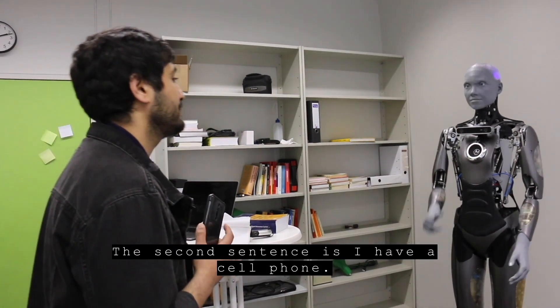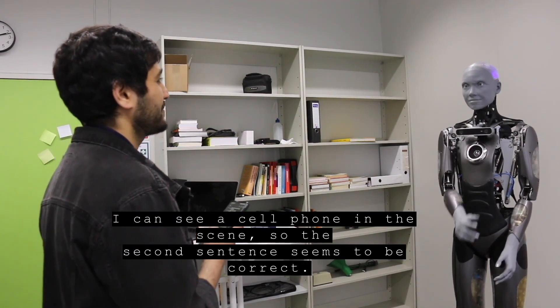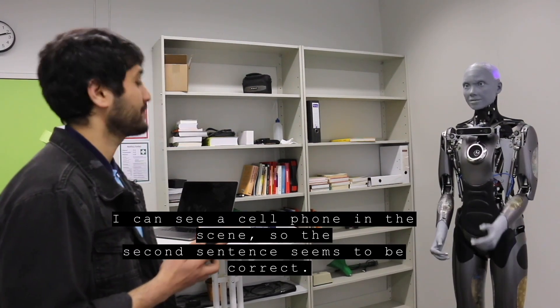The second sentence is, I have a cell phone. I can see a cell phone with you. So, the second sentence seems to be correct.